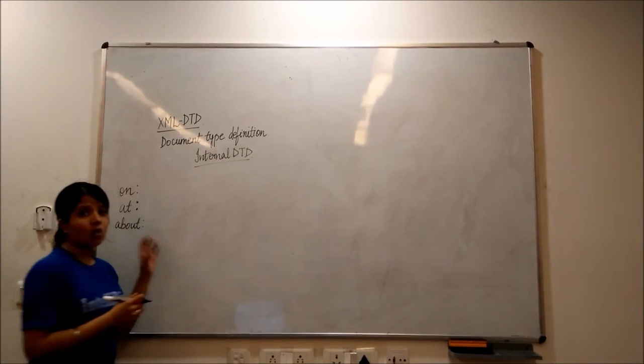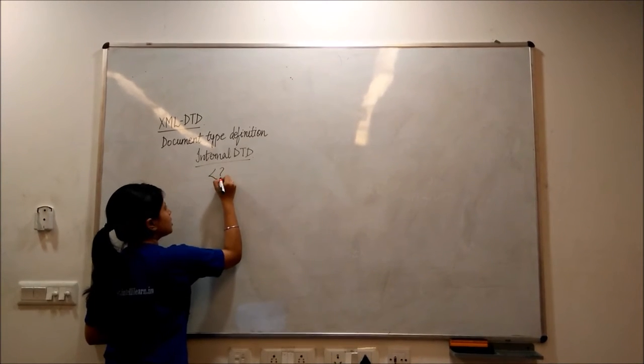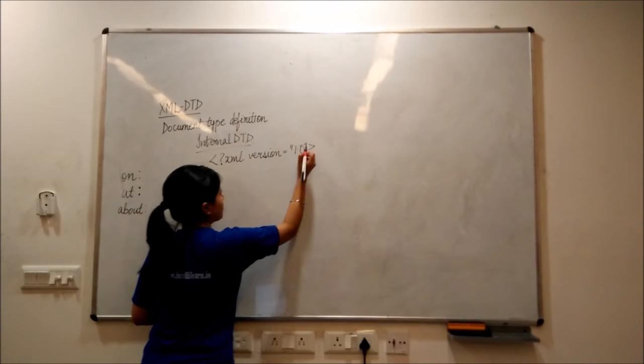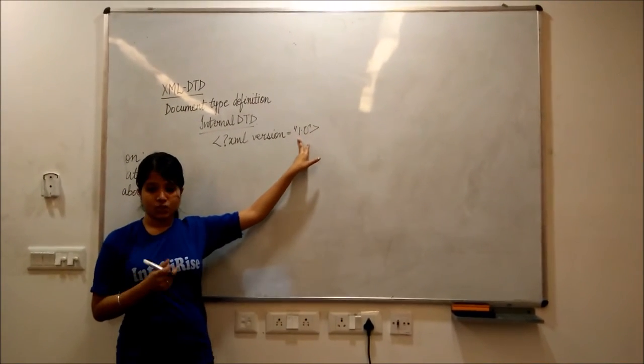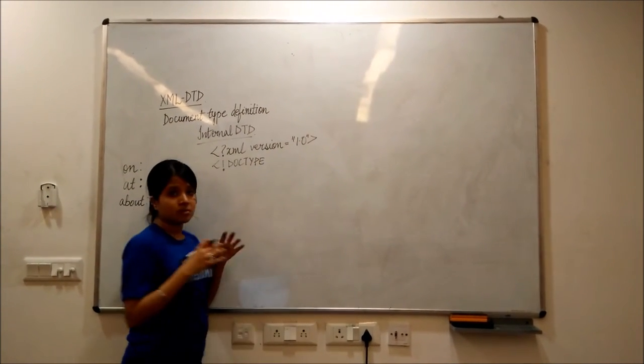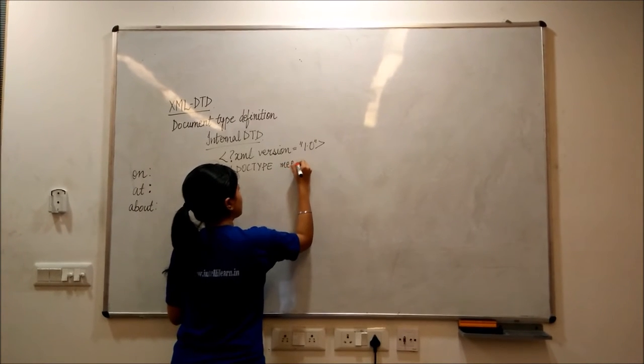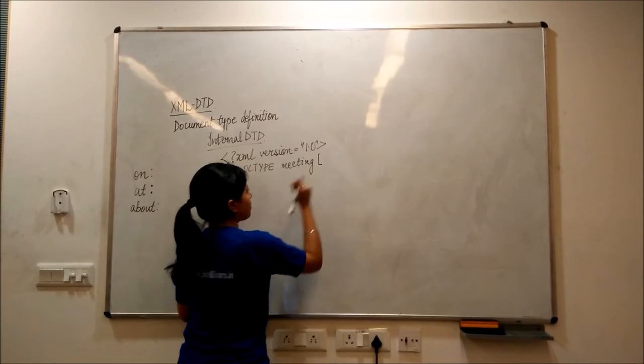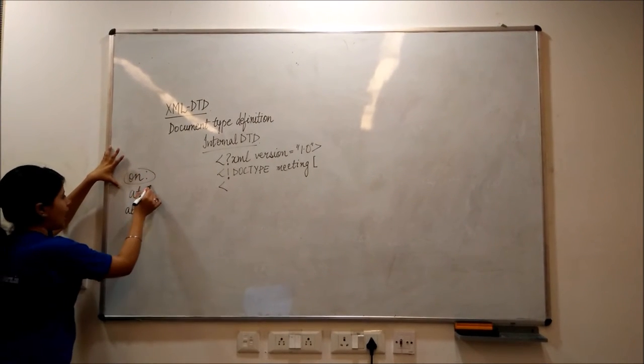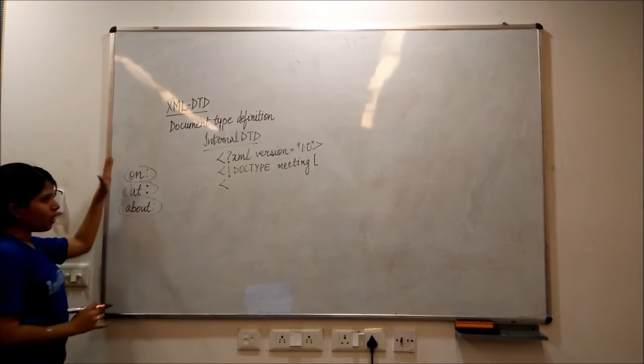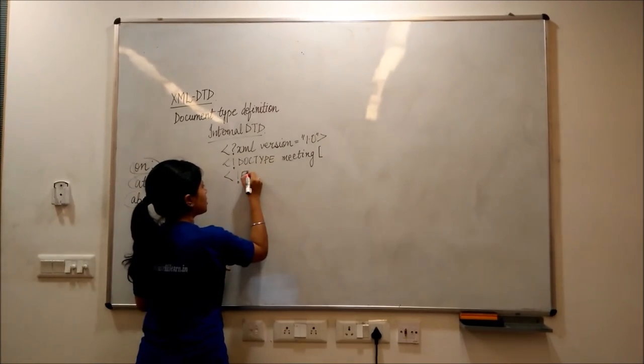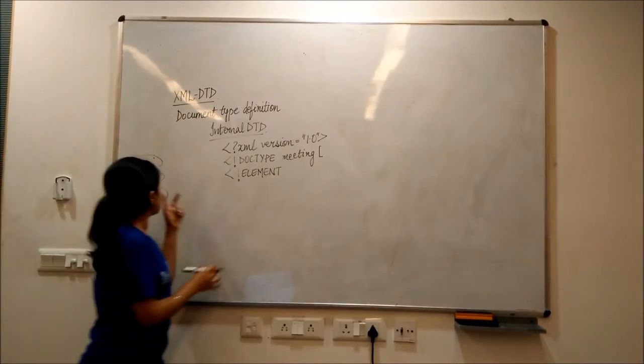how we will implement this example. We will start with XML version equal to 1.0. This defines which version of XML we are using. Then, doc type and I am taking the example of a meeting. So I will write meeting, start with the square brackets and what we are emphasizing is that when this meeting is on, at which destination and what it is all about. So how we will implement this in XML DTD. It will start with element and since our first element is about on which date.